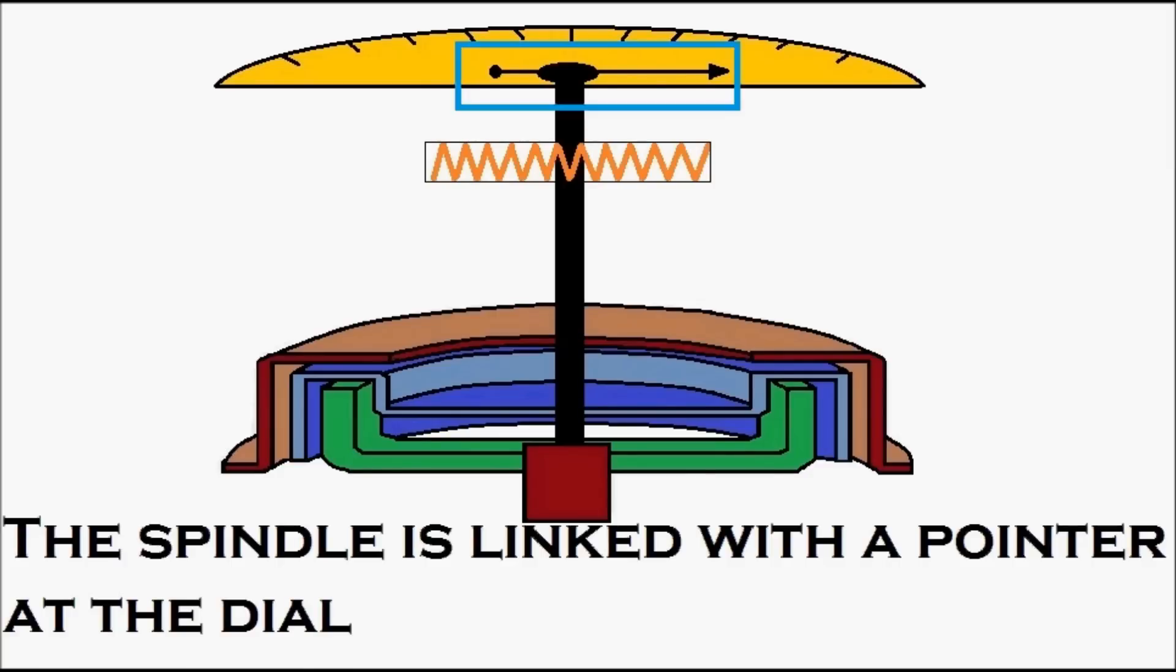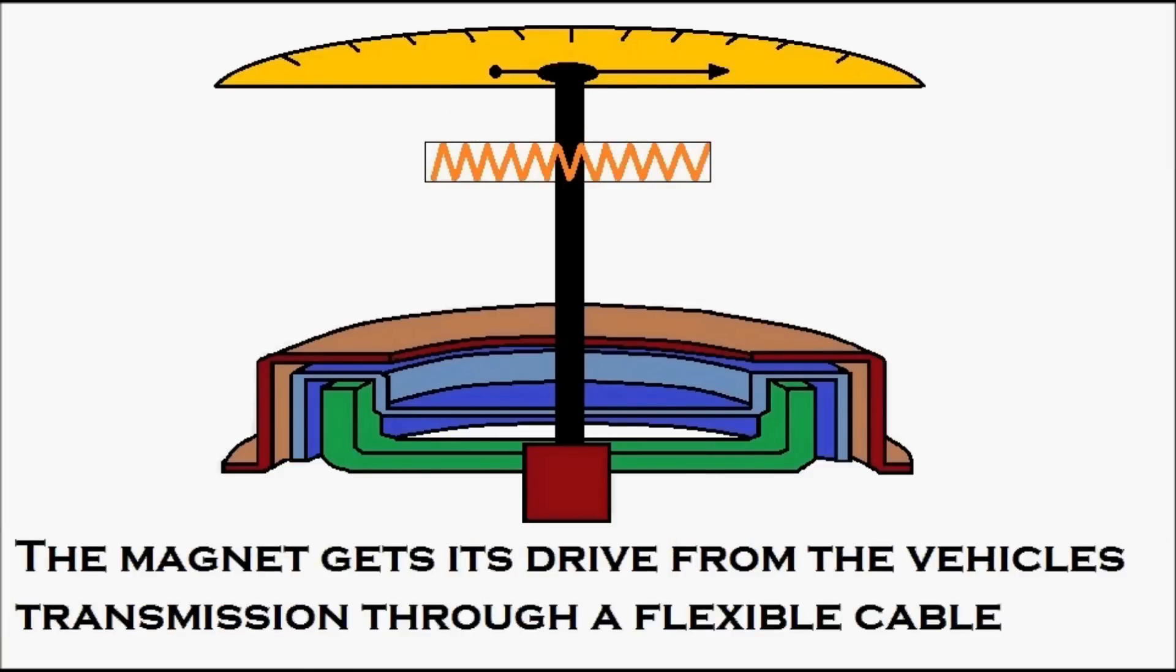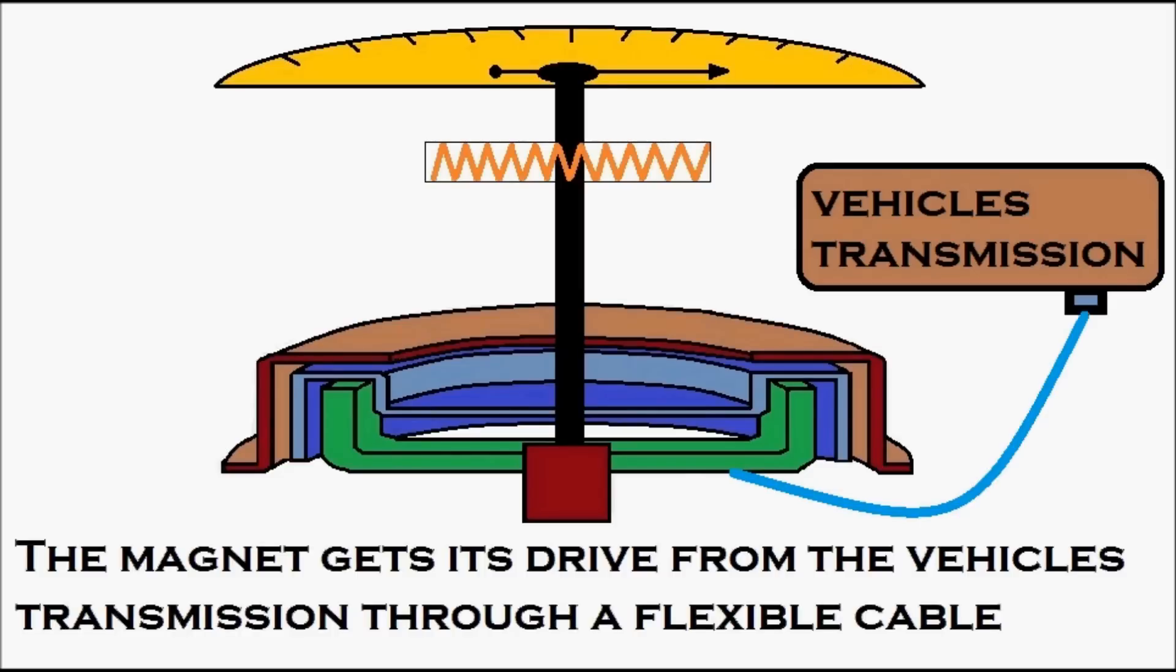The magnet gets its drive from the vehicle's transmission through a flexible coupling. You can see the vehicle transmission is indicated there, and there is a connection coming from the vehicle transmission towards the magnet.